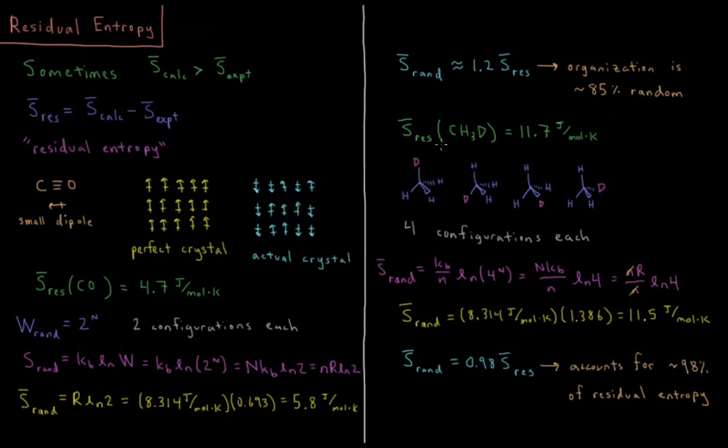Another example could be deuterated methane, CH3D, where one of the four hydrogens has a neutron in its nucleus. The molar residual entropy in this system is 11.7 joules per mole Kelvin. So you can see here that for this methane, if it's in a solid methane crystal, there are four possible ways you could arrange each methane molecule. You could have the deuterium in position 1, 2, 3, or 4.